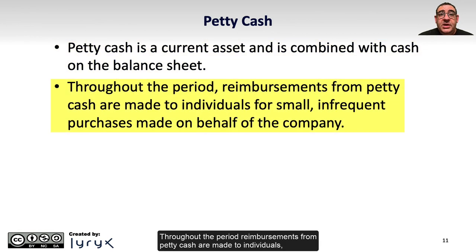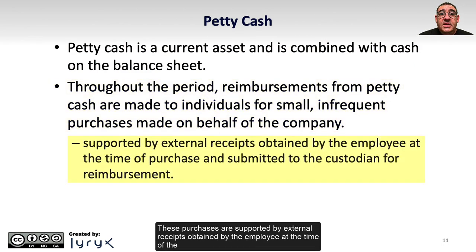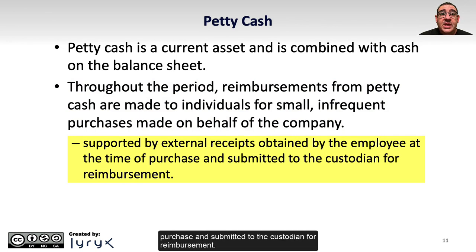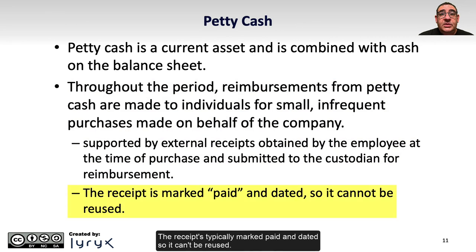Throughout the period, reimbursements from petty cash are made to individuals for small, infrequent purchases made on behalf of the company. These purchases are supported by external receipts obtained by the employee at the time of the purchase and submitted to the custodian for reimbursement. The receipts are typically marked paid and dated so they can't be reused.